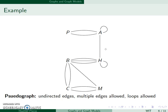This is a pseudograph. We still have undirected edges, multiple edges are allowed, and we allow loops. These are the three types of undirected graphs.